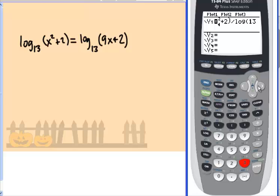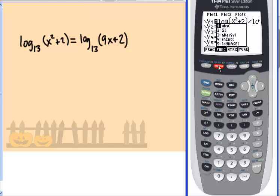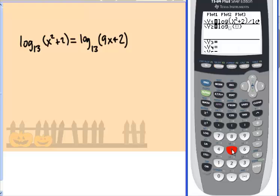If you are on an 84 with the math print feature, then you can go ahead and hit alpha window. And that bottom choice 5 is going to take you to the logarithm set. So you can just hit the alpha window. It brings up the template. And then you can just type in 13 here and then arrow key to the right and type in x squared plus 2.